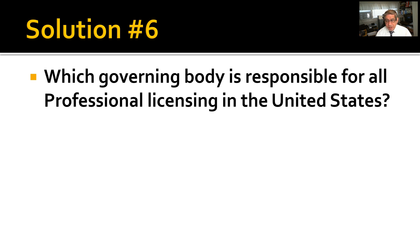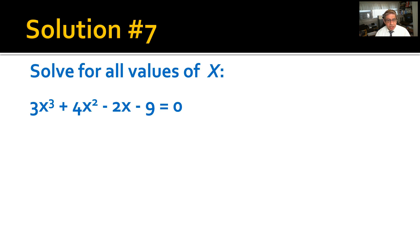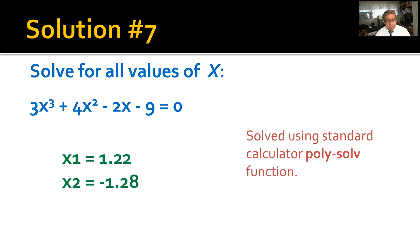Solution number six: Which governing body is responsible for all professional licensing in the United States? There's only one: the state-established professional engineering boards. That's true for all professions actually, not just engineering. Solution number seven: Solve for all values of x. We use the calculator standard poly solve function. Two of the values came out to be the same, so even though it showed x1, x2, and x3, x3 was equivalent to x2. We really only have two solutions to this problem.